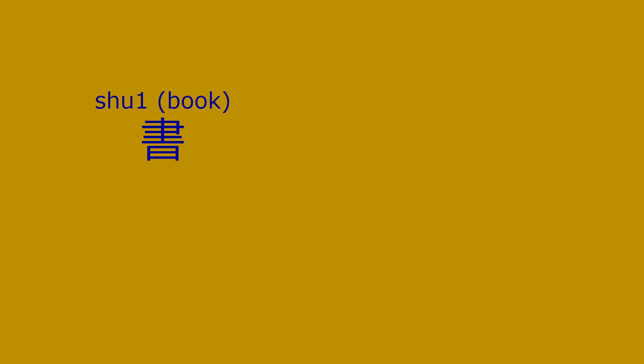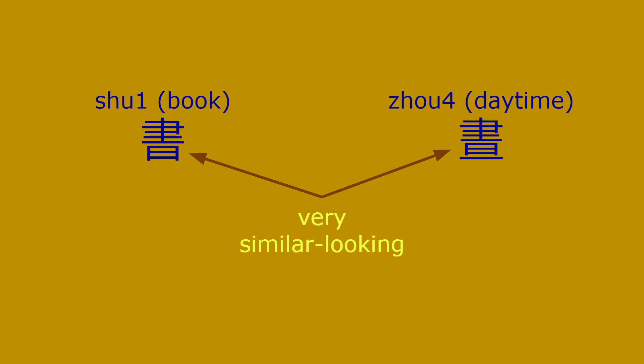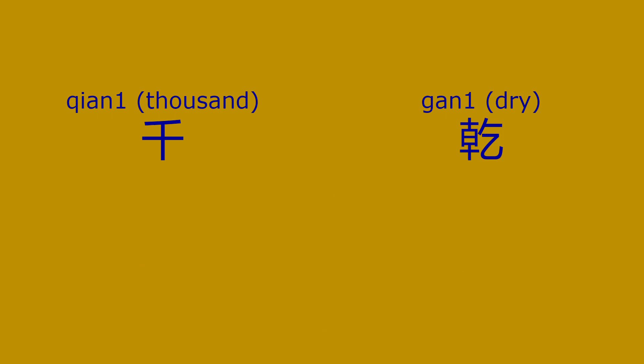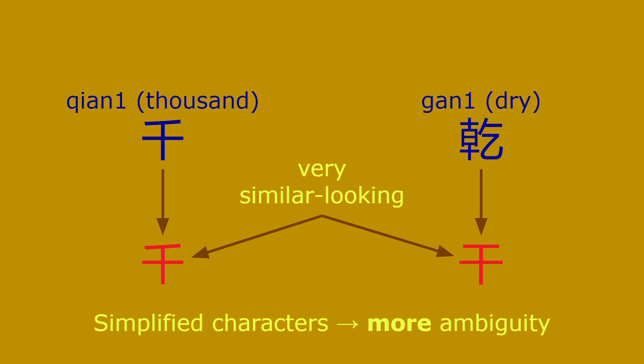There are also arguments regarding the ambiguity of both simplified and traditional characters. Take the traditional characters 'shu' and 'zhou' — they look rather similar. But when simplified, they don't look so similar, which is a case where simplified characters are less ambiguous. However, the reverse can also happen: the traditional characters 'qian' and 'gan' look quite different, but when simplified, they end up looking pretty similar — a case where simplification actually causes more ambiguity.